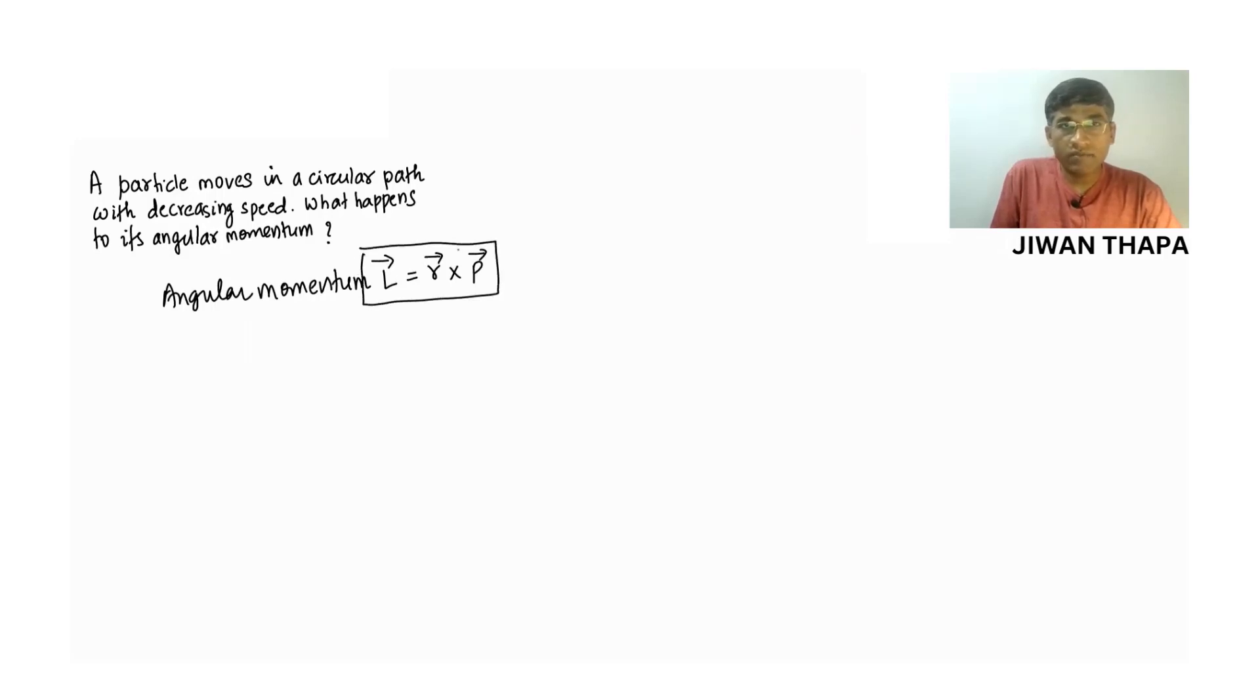We have this. So, this is the position vector. And vector P is linear momentum and we know linear momentum. In magnitude, P equals M times V.